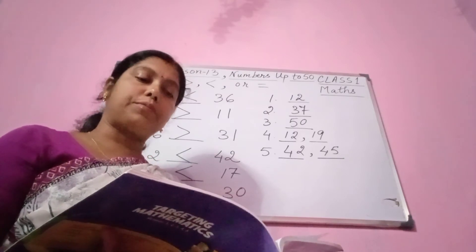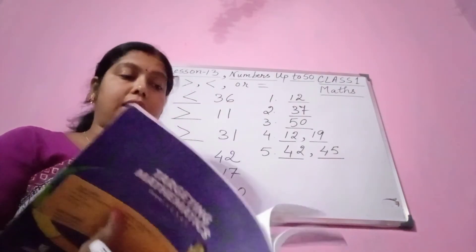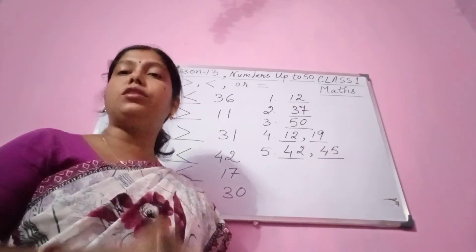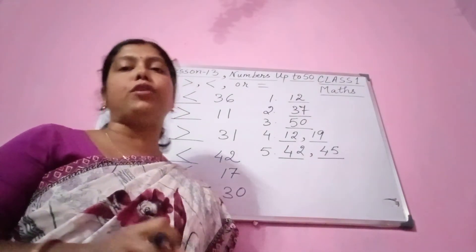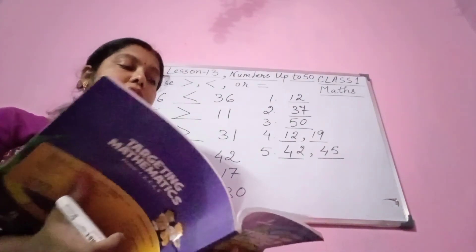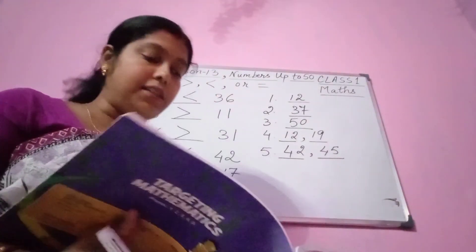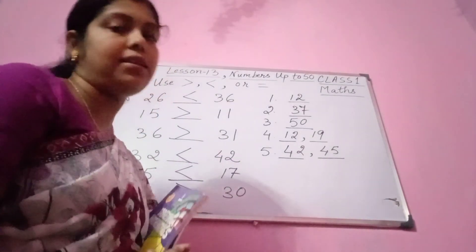We have learnt to count backwards, fill in the numbers, expand tens and ones — for example, 32 is 3 tens and 2 ones. We have learnt missing numbers 1 to 50, writing backwards from 50 to 1, circling the greater number, circling the smaller number, and today we have learnt the signs — greater than, smaller than, and equal to.